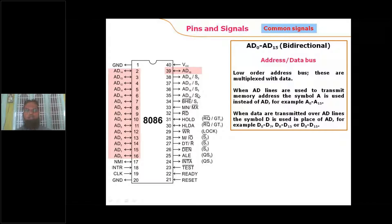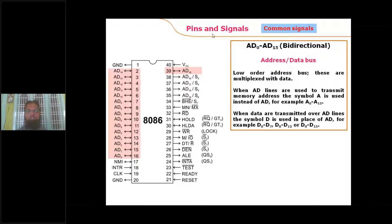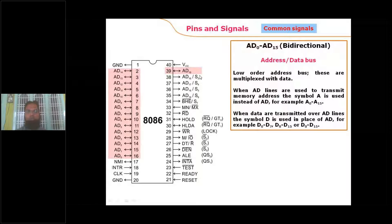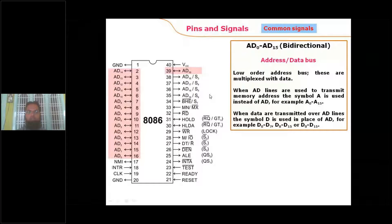The status signals indicate the status of various features of the 8086. The combination of S3 and S4 indicates which segment is currently being used — code, data, extra, or stack segment. For example, S3S4 = 00 means the extra segment is being accessed; S3S4 = 11 means the data segment is being accessed. S5 reflects the interrupt enable flag — if IF=1, S5=1; if IF=0, S5=0. S6 is not used in the 8086.